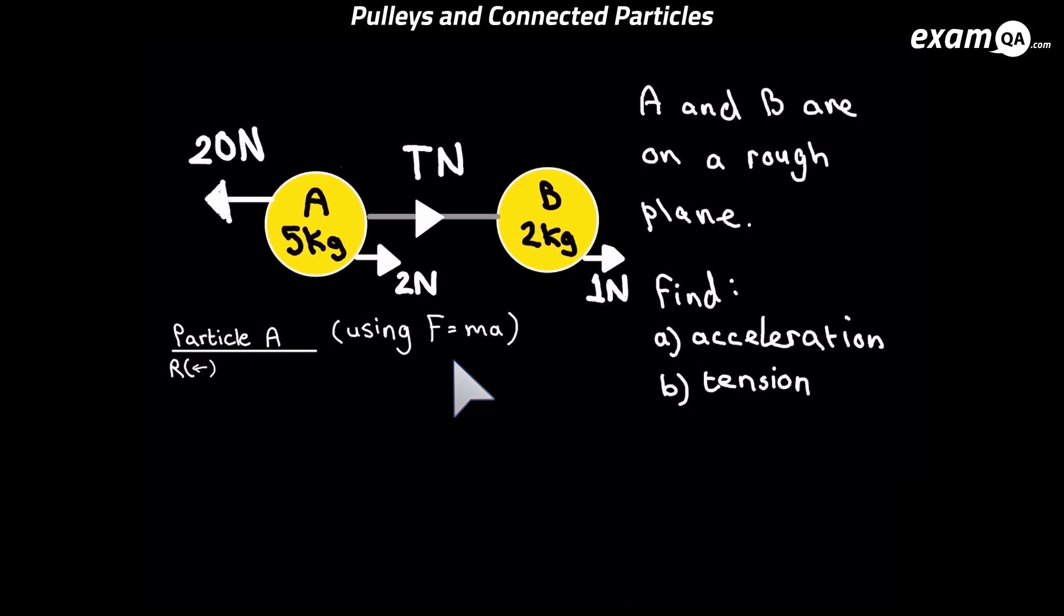The force is going to be the resultant of all the forces. To start off with, we're going to look at particle A's forces. Particle A has got 20 Newtons to the left, and to the right it's got tension and a 2 Newton force. The 1 Newton is not on particle A, so we don't need to think about that.